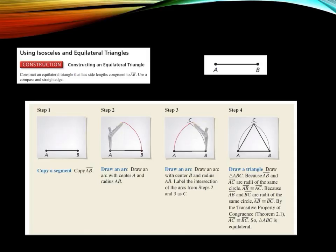More constructions — please pause the video here to follow steps one through four and try constructing an equilateral triangle using the segment AB given in your notes.